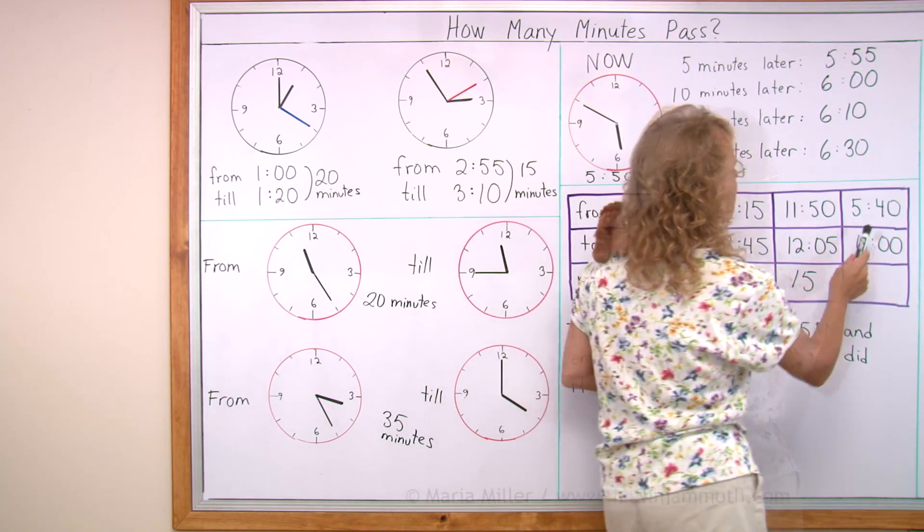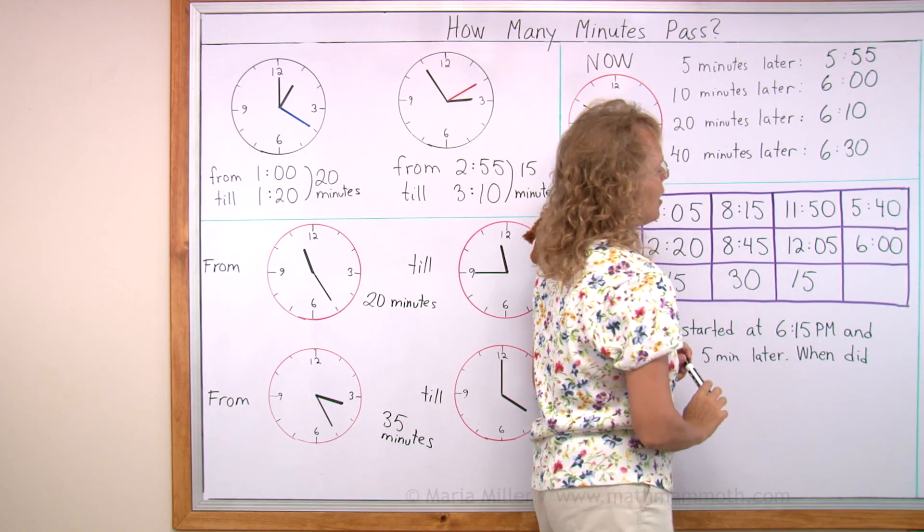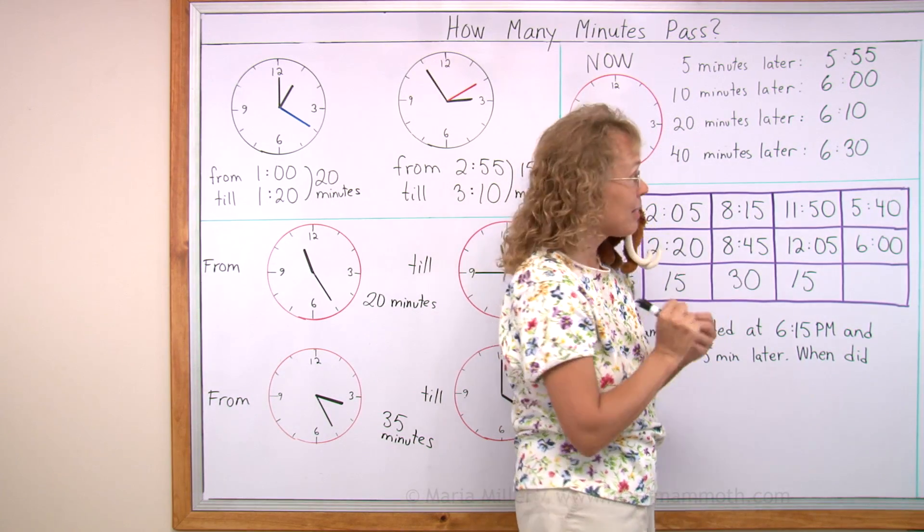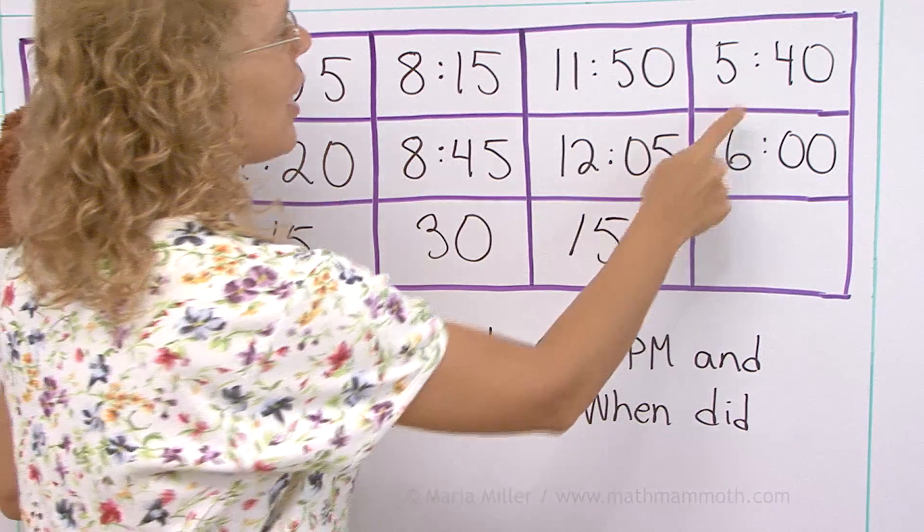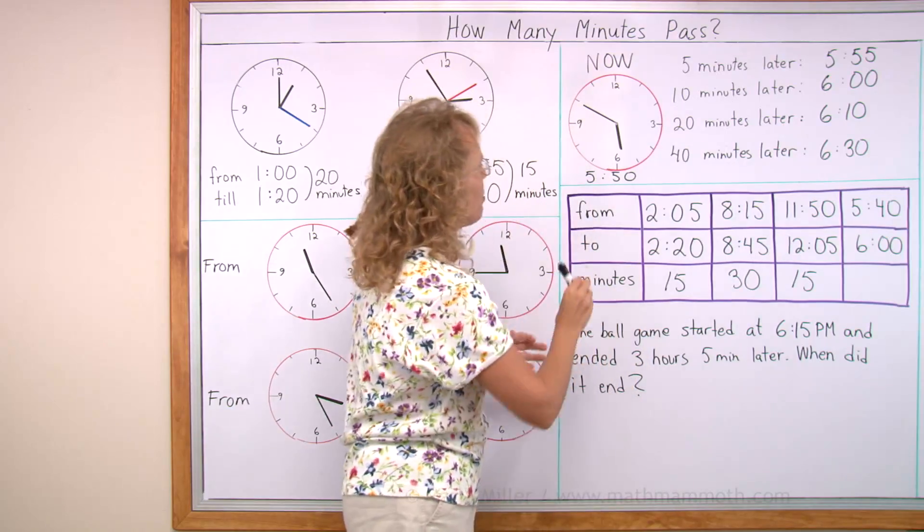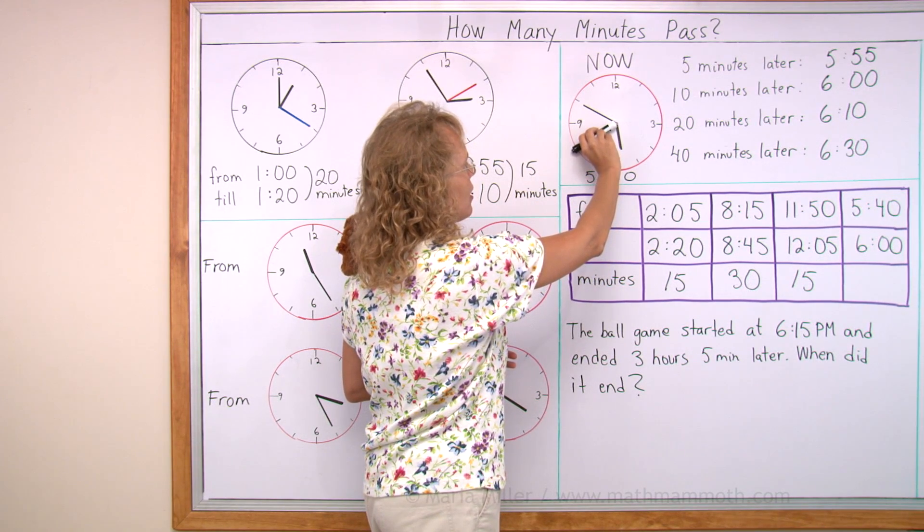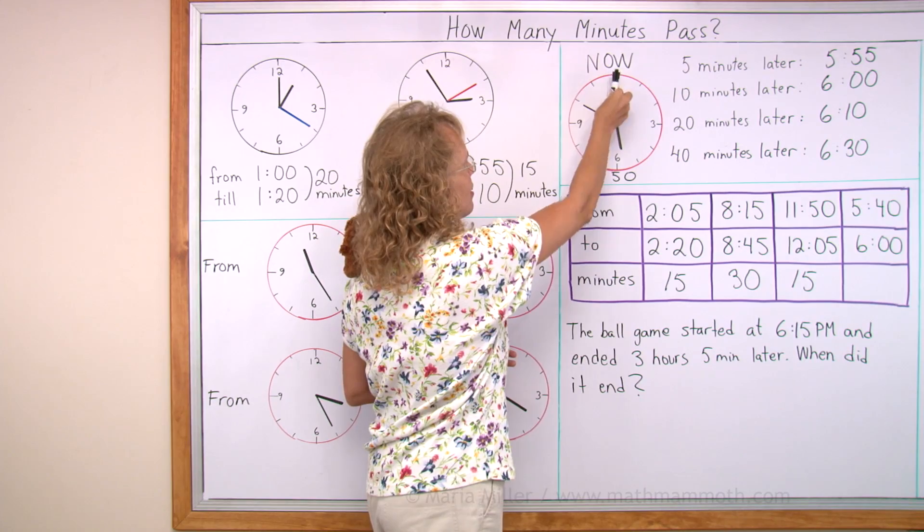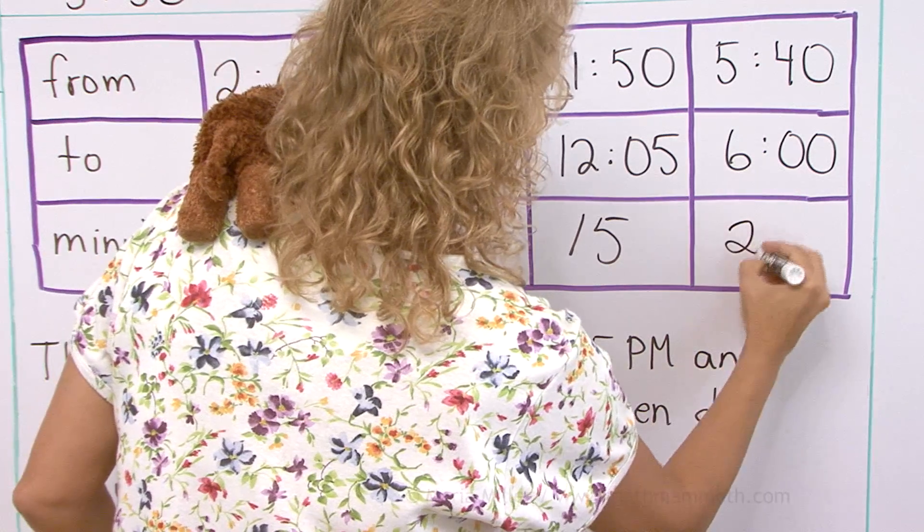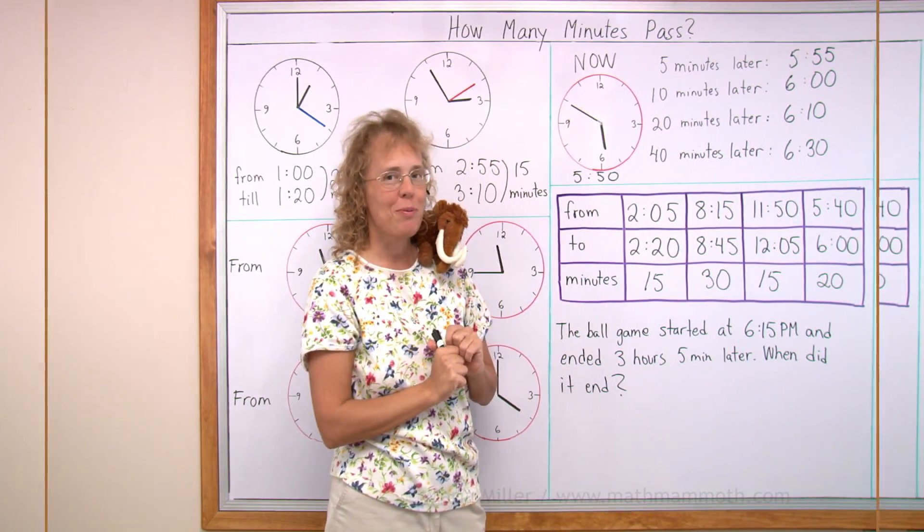And then this one changes the hour too, from 5 till 6. 5:40 and 6 o'clock. How many minutes pass? Okay, if you have 40 minutes, it would mean that your minute hand is pointing here. And then till the next whole hour, goes like that, should be 20 minutes. Right. You can always imagine moving the minute hand on the clock and that can help you.